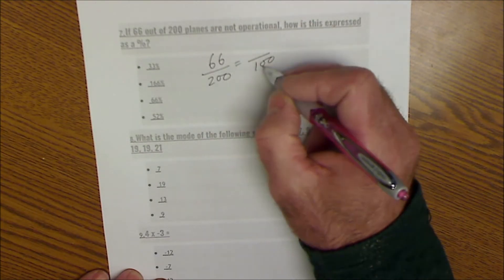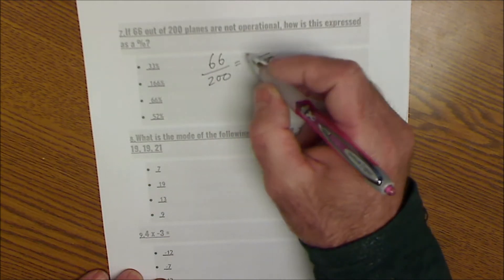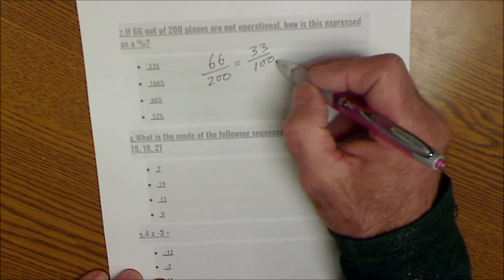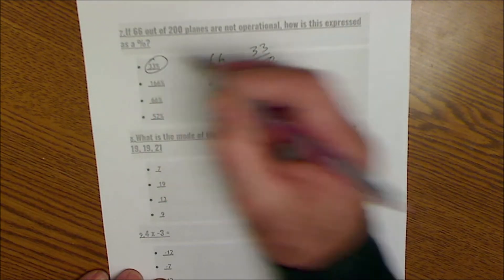How do I get to 100? I divide by 2, so I take that and divide it by 2 to get 33 over 100. That's a fraction over 100, which is also the same as 33%.